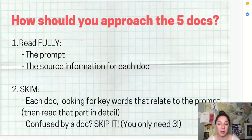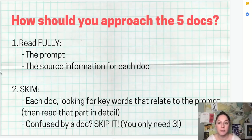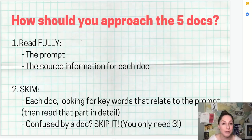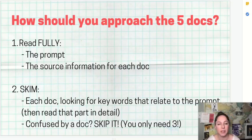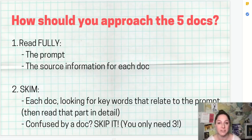How should you approach the five documents? A lot of people ask whether to skim everything. You should make sure you read fully the prompt and the sourcing information for each document. Read every single word of the prompt because the DBQ is often more specific than other essay prompts. For example, a broad LEQ might say 'compare elements of state building from 1200 to 1450,' but a DBQ version might say 'evaluate the role of belief systems in state building from 1200 to 1450.' You want to make sure you don't just skim the prompt and miss that key focus.